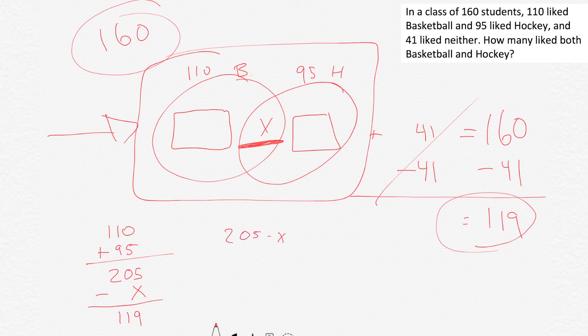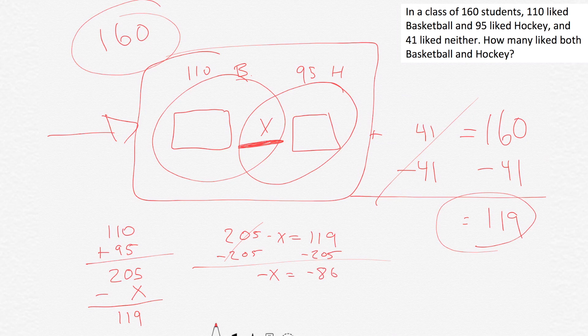We have 205 minus X equals 119. Subtracting 205 from each side gives negative X equals negative 86. Multiplying by negative 1, X equals 86. So 86 people must like both basketball and hockey.